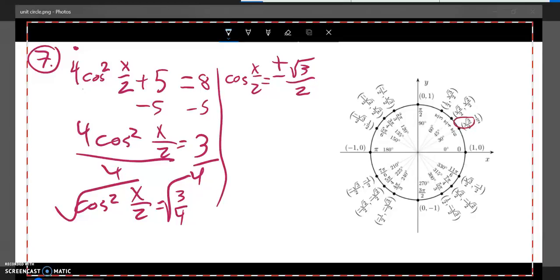Cosine is width, so that's these values right here. So it looks like x over 2 would equal pi over 6, 5 pi over 6, 7 pi over 6, or 11 pi over 6.